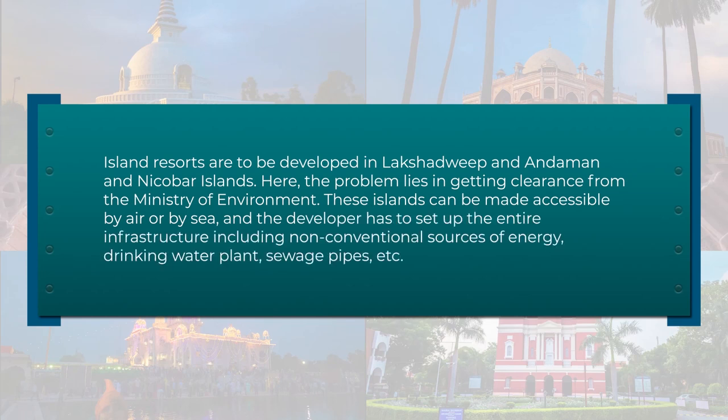Island resorts are to be developed in Lakshadweep and Andaman and Nicobar Islands. Here the problem lies in getting clearance from the Ministry of Environment. These islands can be made accessible by air or by sea, and the developer has to set up the entire infrastructure — including non-conventional sources of energy, drinking water plants, and sewage pipes — because these are islands surrounded by sea water. This raises the question of economic viability, since the government's investment will be land given on long lease and private players have to pitch in to develop the infrastructure. One way out is to use luxury ships both to transport and accommodate tourists, so that environmental damage can be contained and high investment on infrastructure can be reduced.